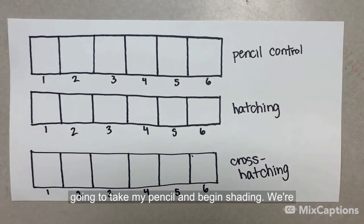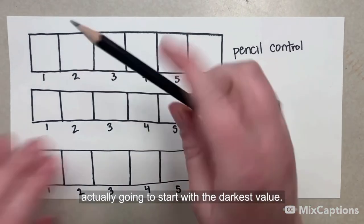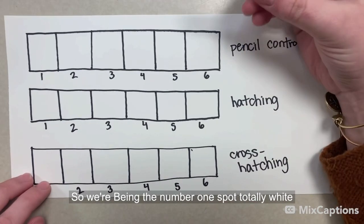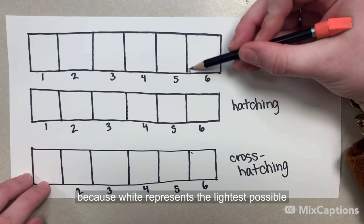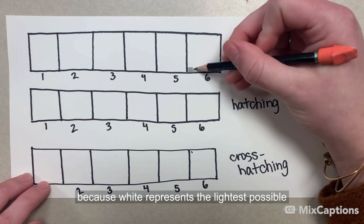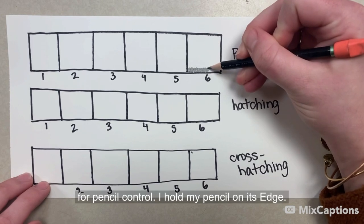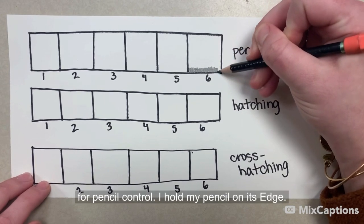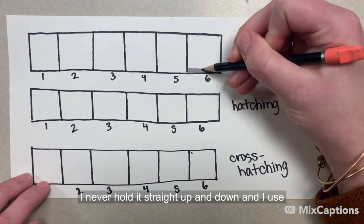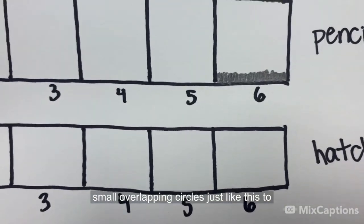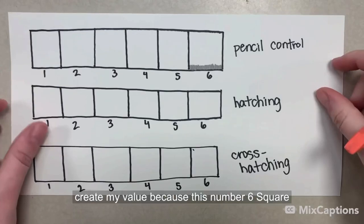Now I'm going to take my pencil and begin shading. We're actually going to start with the darkest value. So we're leaving the number one spot totally white because white represents the lightest possible value, that white of the paper showing through. For pencil control, I hold my pencil on its edge. I never hold it straight up and down. And I use small overlapping circles just like this to create my value.